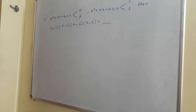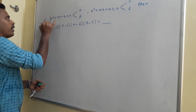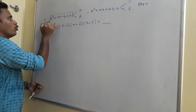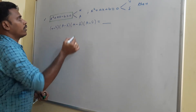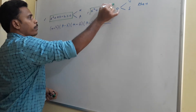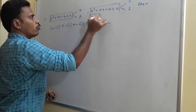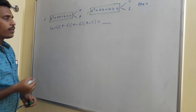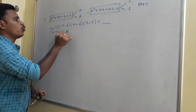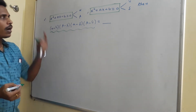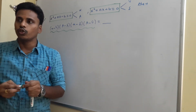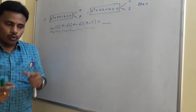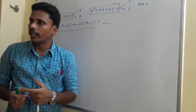Look at the problem on the board. The equation x² plus ax minus b equals 0 has two roots alpha and beta. The equation x² plus ax plus b equals 0 has two roots gamma and delta. Alpha, beta, gamma, delta are Greek letters typically used to represent roots of quadratic equations.